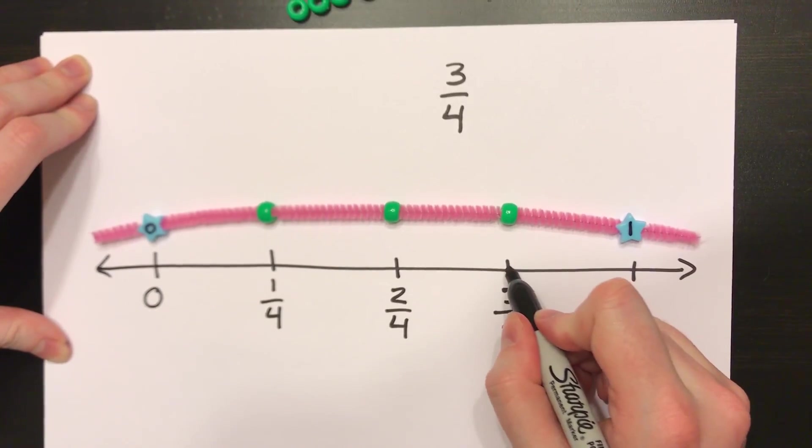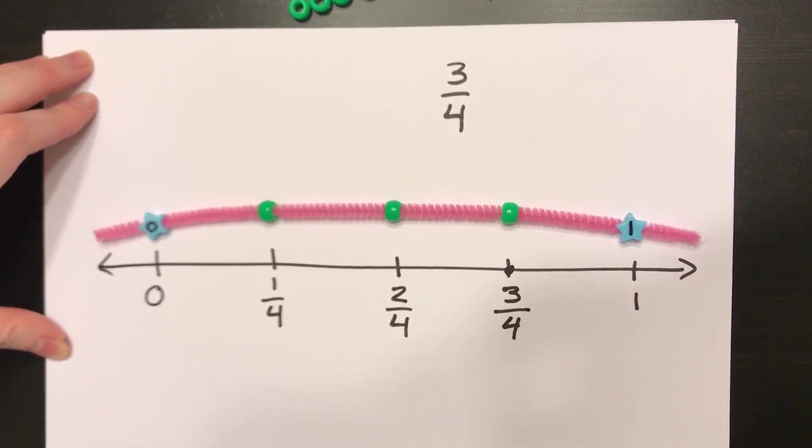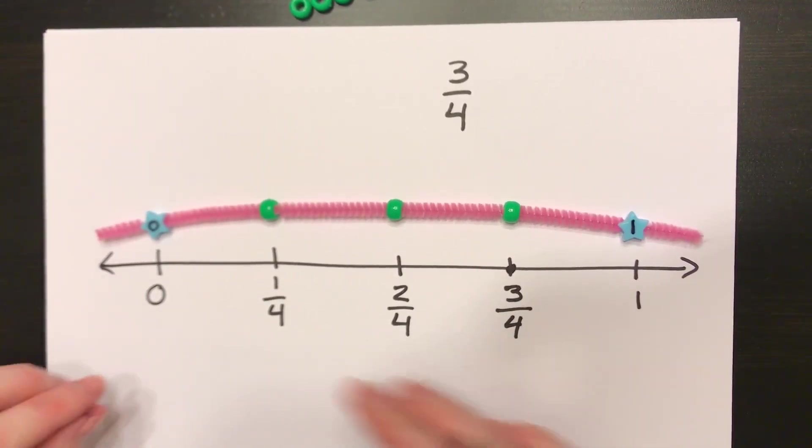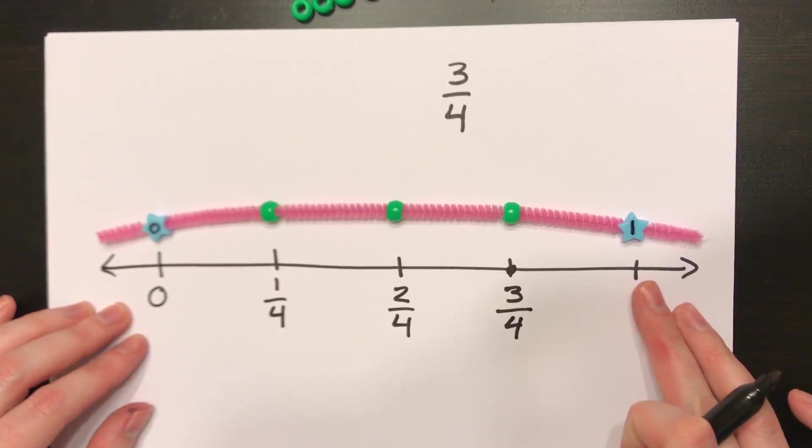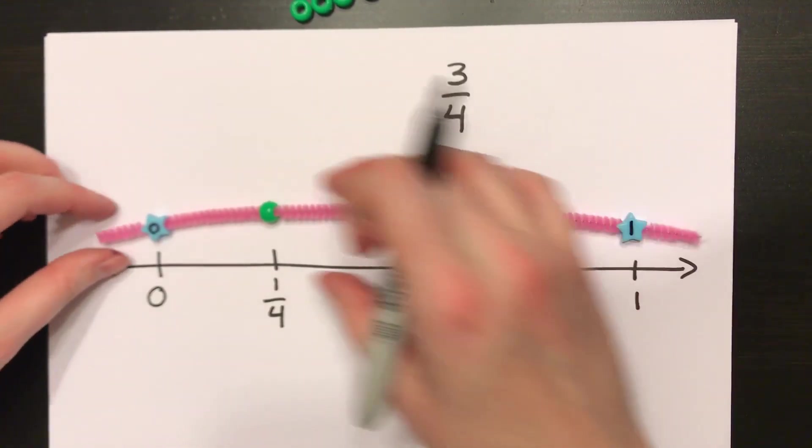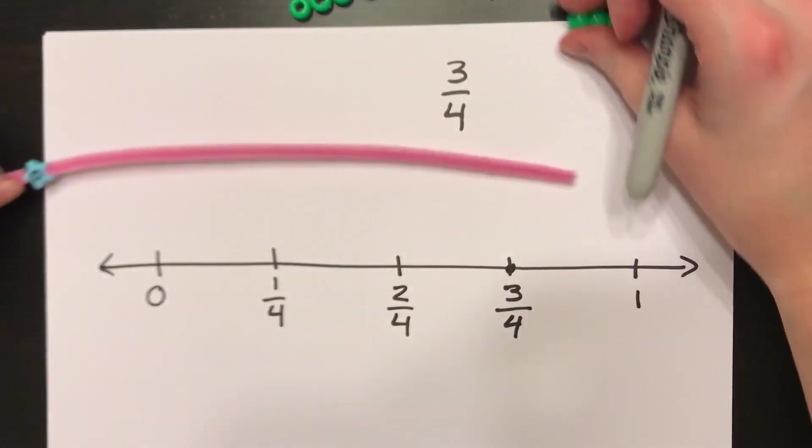And if I wanted to find 3 fourths, I'd put a quick point there. Now you've known how to make fractions between 0 and 1, but let's actually challenge ourselves and go above one whole.